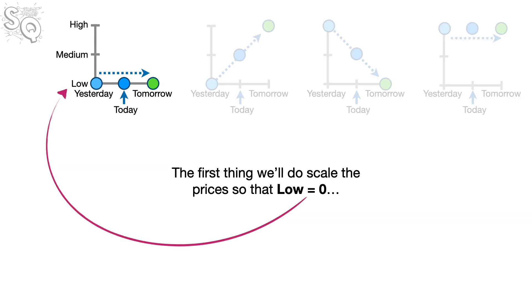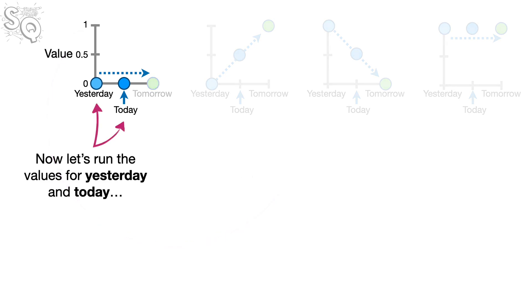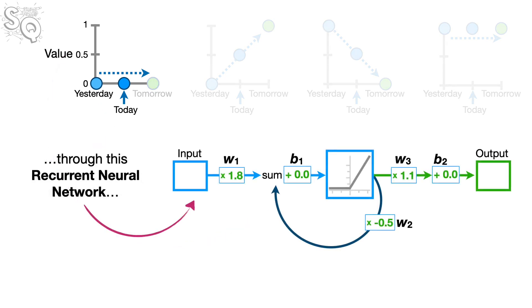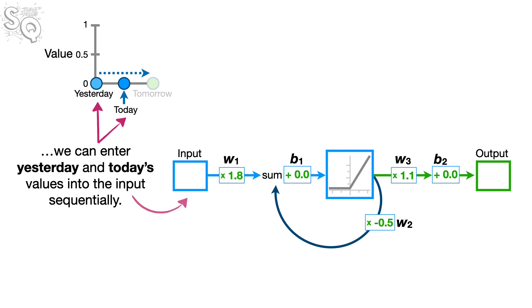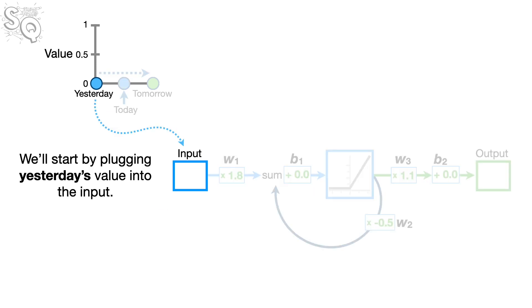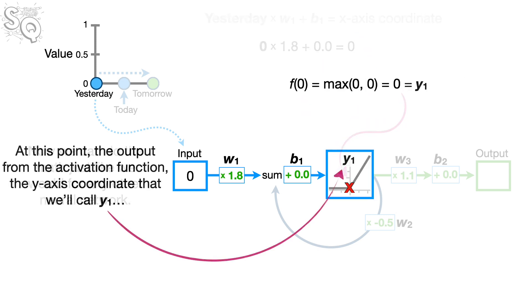Now that we see the general trends in stock prices in StatLand, we can talk about how to run yesterday and today's data through a recurrent neural network to predict tomorrow's price. The first thing we'll do is scale the prices so that low equals 0, medium equals 0.5, and high equals 1. Now let's run the values for yesterday and today through this recurrent neural network and see if it can correctly predict tomorrow's value. Now, because the recurrent neural network has a feedback loop, we can enter yesterday and today's values into the input sequentially.